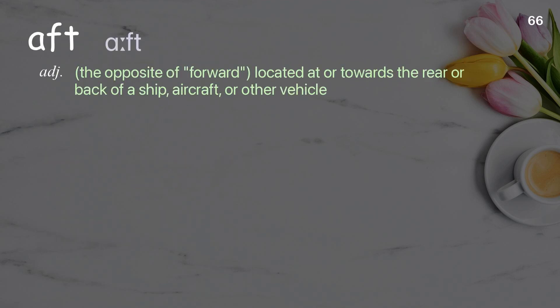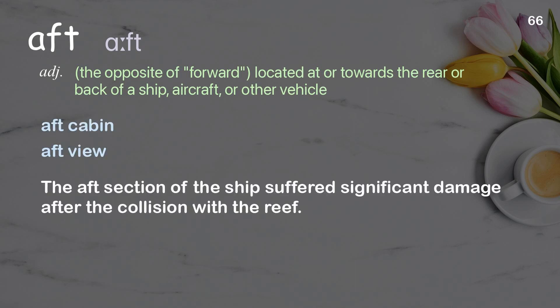Aft: the opposite of forward; located at or towards the rear or back of a ship, aircraft, or other vehicle. Examples: aft cabin, aft view. The aft section of the ship suffered significant damage after the collision with the reef.